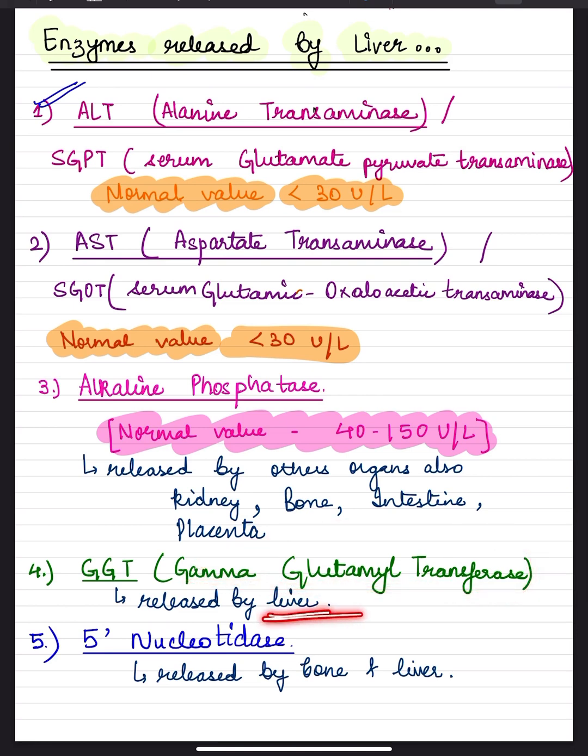The fifth one is 5-prime nucleotidase which is released by the bone and the liver. Thank you.